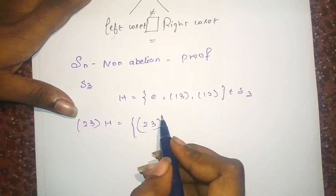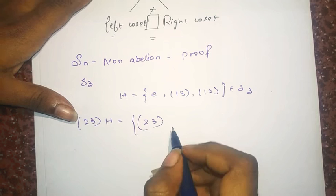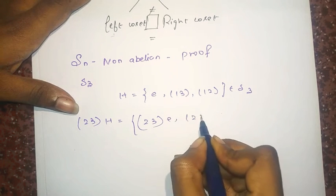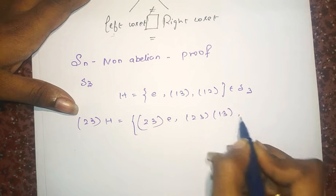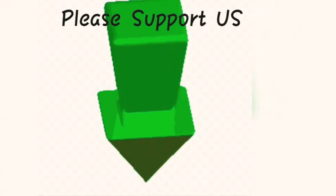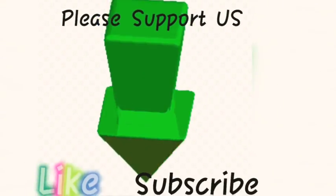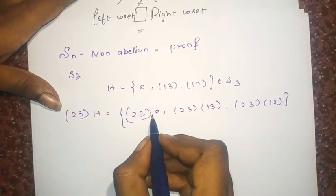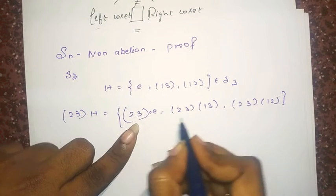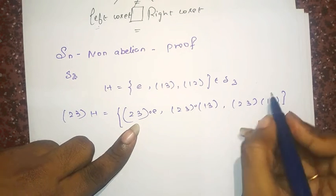I have already discussed how to find the left coset and (2,3), (1,3), (2,3), (1,2). The composition, the operation between these two permutations is composition and these two permutations is composition.